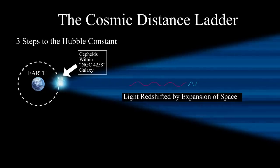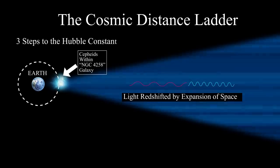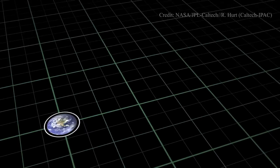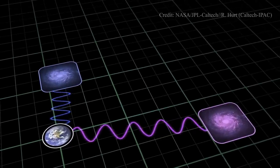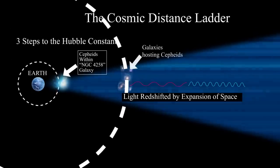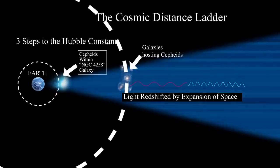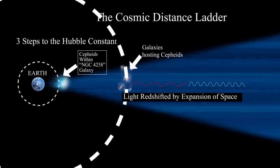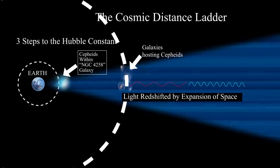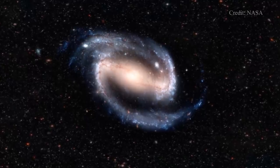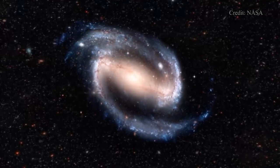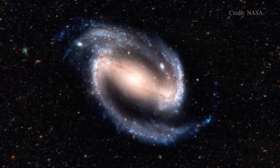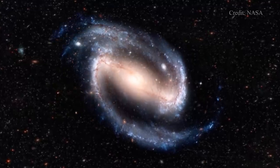It relies on using different types of objects as rungs on a ladder, with each rung providing a way to measure distances to more distant objects. The first rung on the Cosmic Distance Ladder is the measurement of distances to nearby stars, using the technique of parallax. This involves measuring the apparent shift in the position of a star against the background of more distant stars as the Earth orbits the Sun. By measuring the angle of this shift, astronomers can calculate the distance to the star. The next rung is the measurement of distances to nearby galaxies, using a type of variable star known as a Cepheid variable. Cepheids have well-known relationship between their intrinsic brightness and their period of variation, which allows astronomers to determine their distance based on their observed brightness.